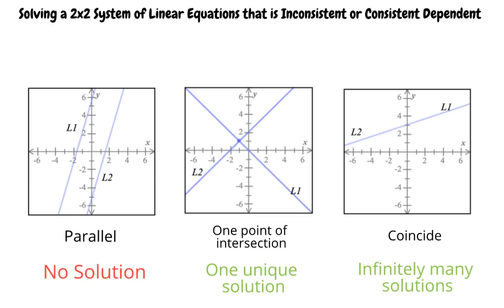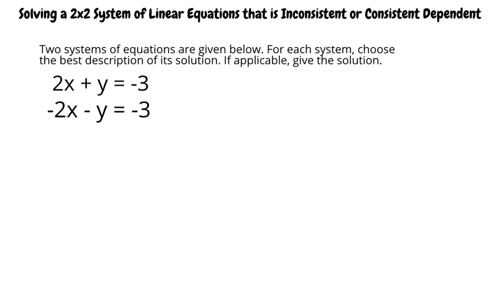Let's look at an example. Two systems of equations are given below. For each system, choose the best description of its solution. If applicable, give the solution. The first system: 2x plus y equals negative 3, and negative 2x minus y equals negative 3.